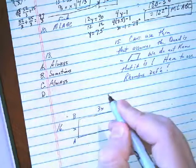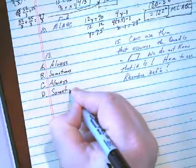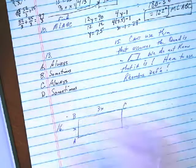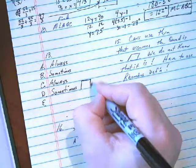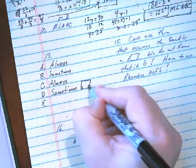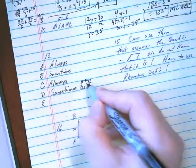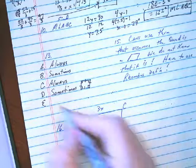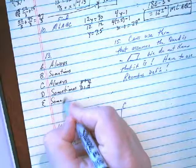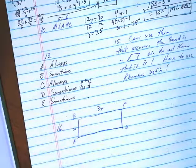What about D? A rhombus is a square. Sometimes. If the angles happen to be 90 degrees, four sides are congruent, then that's a rhombus. So it's sometimes a square as well. And a rhombus is a rectangle. Again, sometimes. Again, when it's a square.